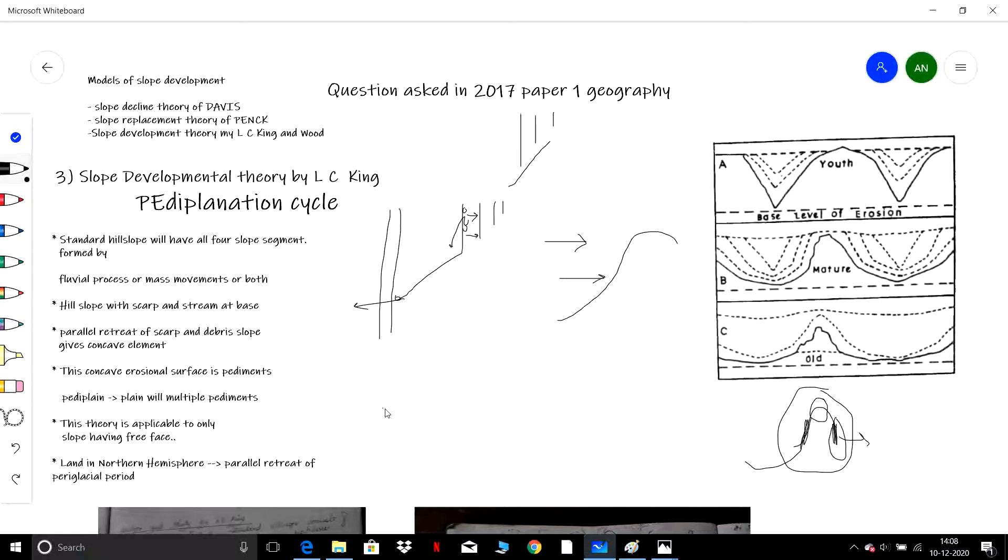Over a period of time, as this concave length increases, it develops pedimonts. This is the erosional surface which is developed—pedimonts. A particular plain which has multiple pedimonts is called a pediplain. Hence, L.C. King's concept is based on the pediplanation cycle. This was asked in 2017.